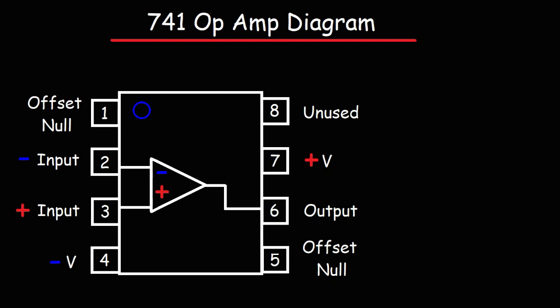In this video we're going to talk about how to make the Wien bridge oscillator circuit using the 741 op-amp device.